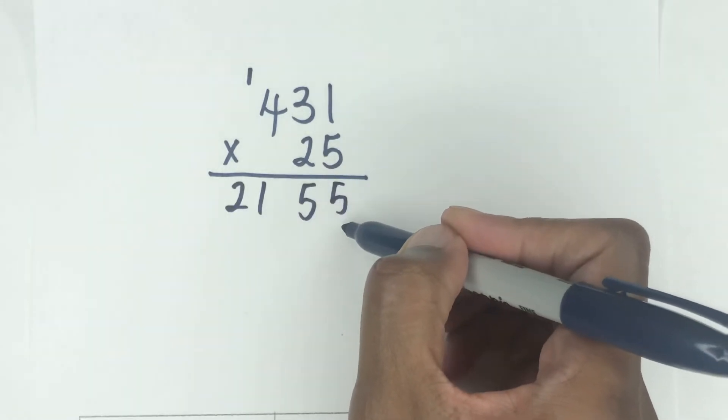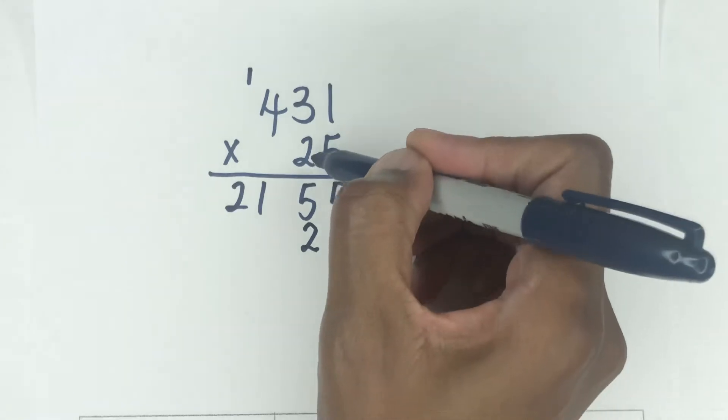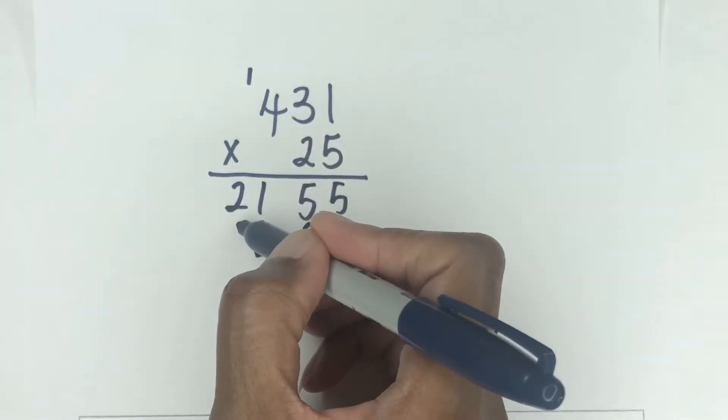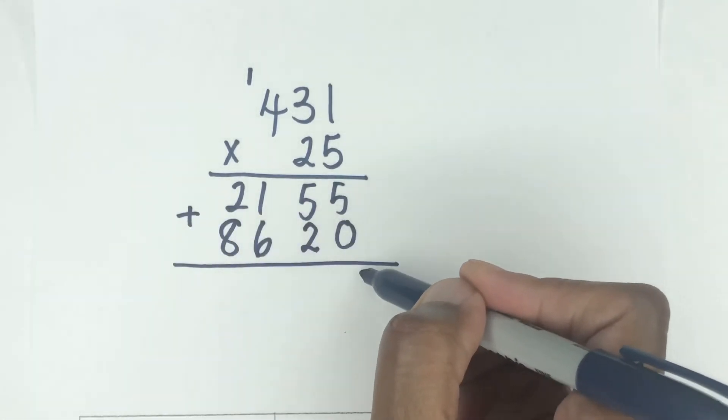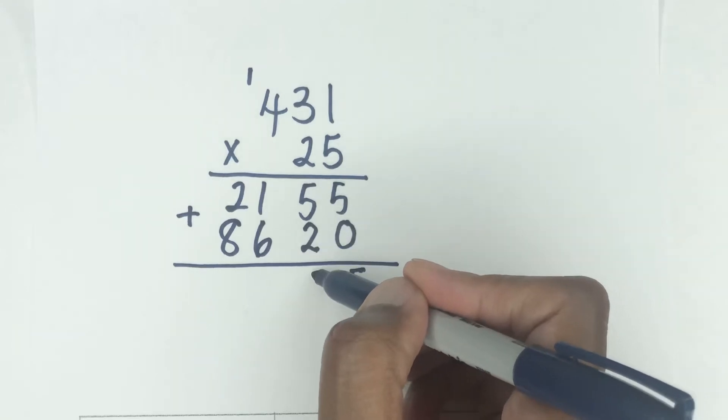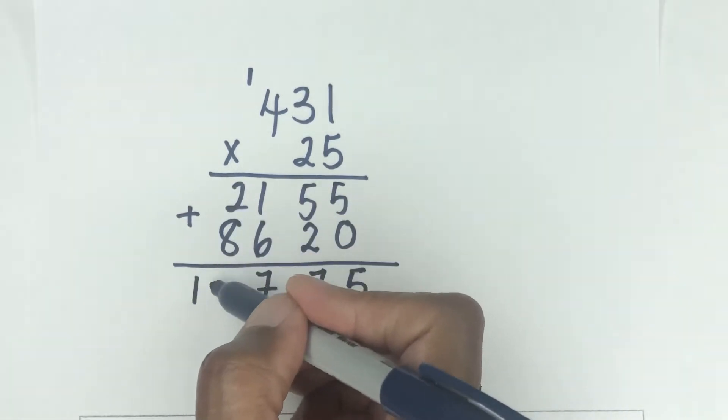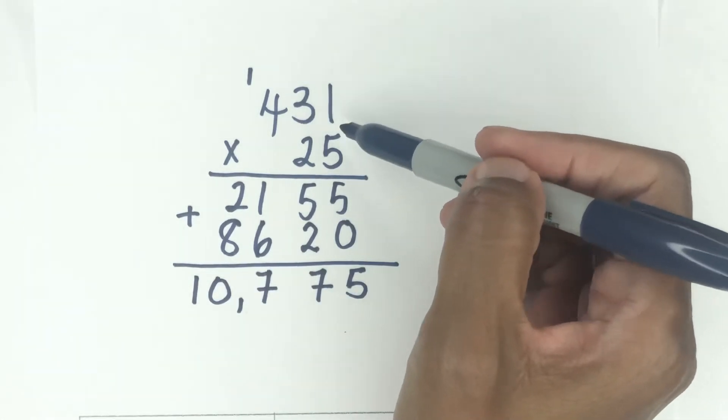Block off the ones place. Two times one is two. Two times three is six. Two times four is eight. All right, then we're going to add this section. Five plus nothing is five. Five plus two is seven. Six plus one is seven. Eight plus two is 10. So here we have 10,775, and that's the answer for 431 times 25.